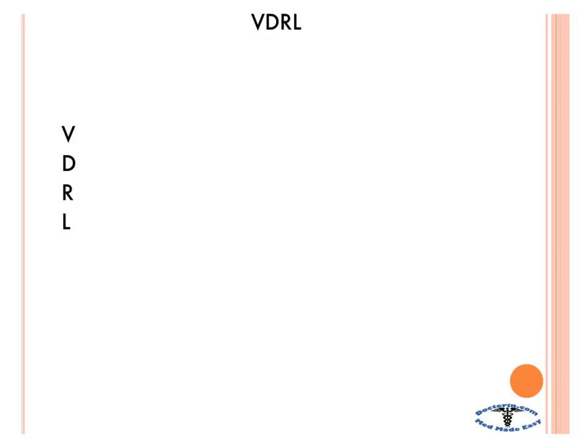So now we're going to talk about the VDRL test, and that's used to test for syphilis. You test the chancre, or you test the gummas, or you test the condylomata lata. You can also test using darkfield microscopy to see the spirochete itself.